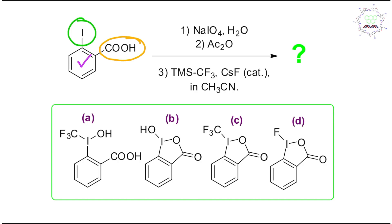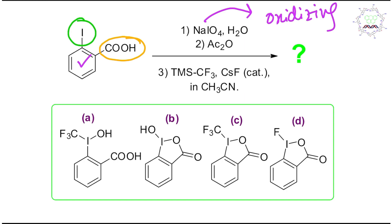Now if you look at the reagents, the first-step reagent is NaIO4 and water. It's not a simple double bond in benzene, so double bond oxidation — don't expect that. If you look at this, NaIO4 is an oxidizing agent. It cannot oxidize the double bonds of benzene, so where is oxidation possible? Two options: one is the carboxylic acid and another is iodine.